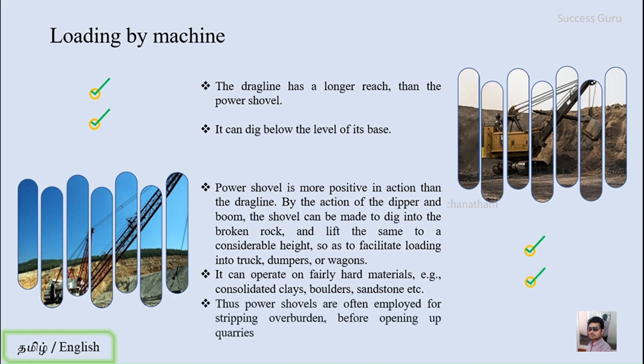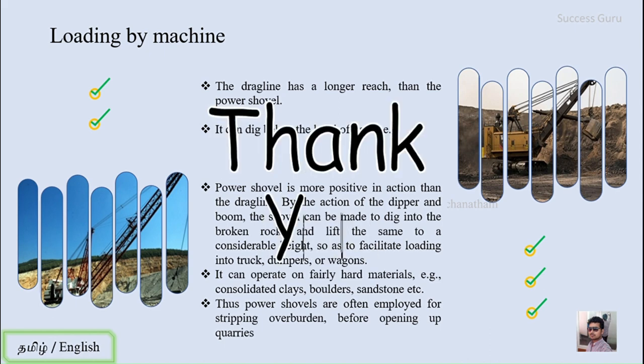Lastly, power shovels are often employed for stripping overburden before opening a quarry — they are mainly used to remove the top sediment, soil, or broken rock surface, after which quarrying and mining takes place. This completes the comparison between the power shovel and drag line, and this video as well. We will continue with part 3 in the next video. Thank you.